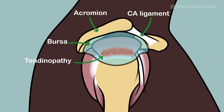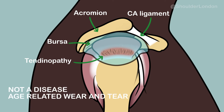Rotator cuff tendinopathy is not a disease. It is an age-related wear and tear to the tendons, much like grey hair or wrinkles. These worn tendons can cause pain when patients experience minor injuries or when there is any weakness or imbalance in the rotator cuff muscles.